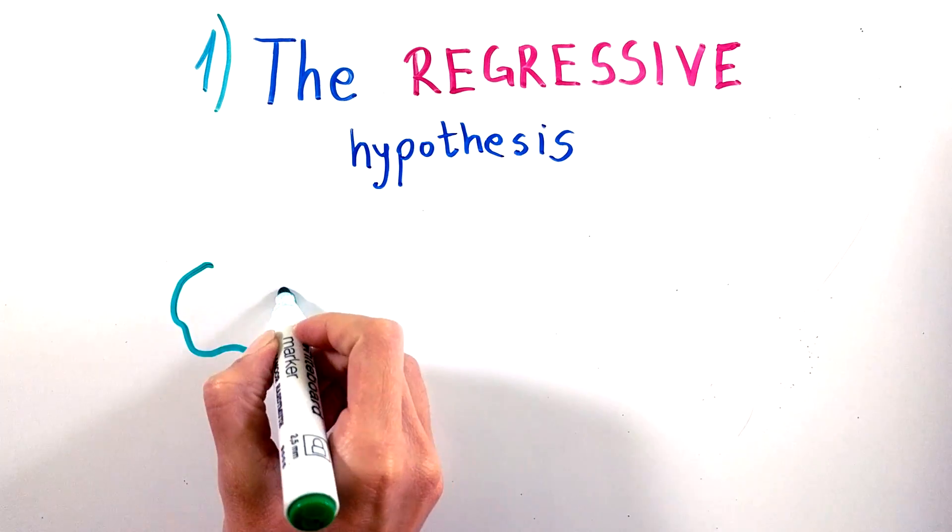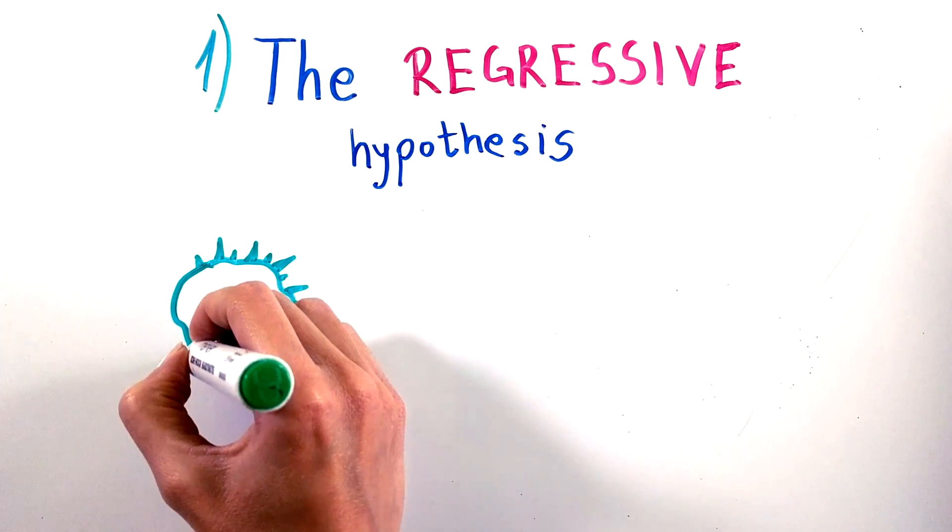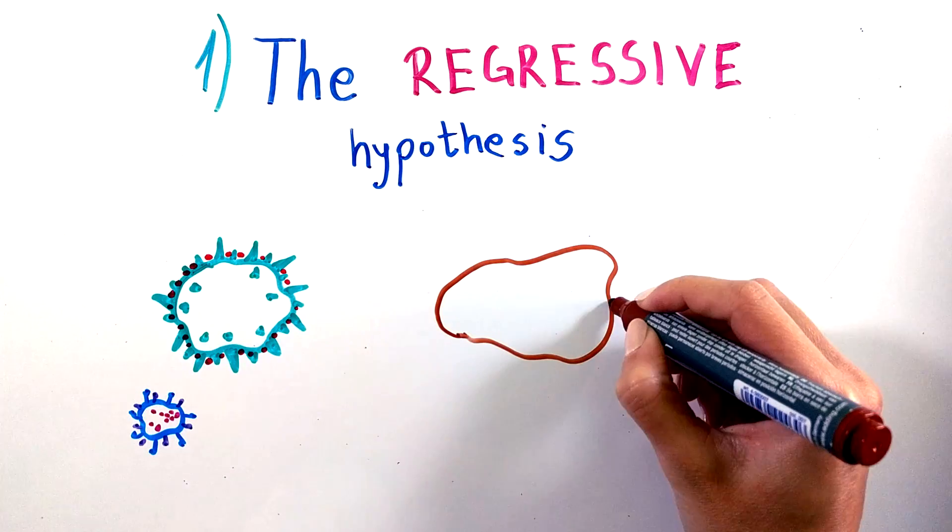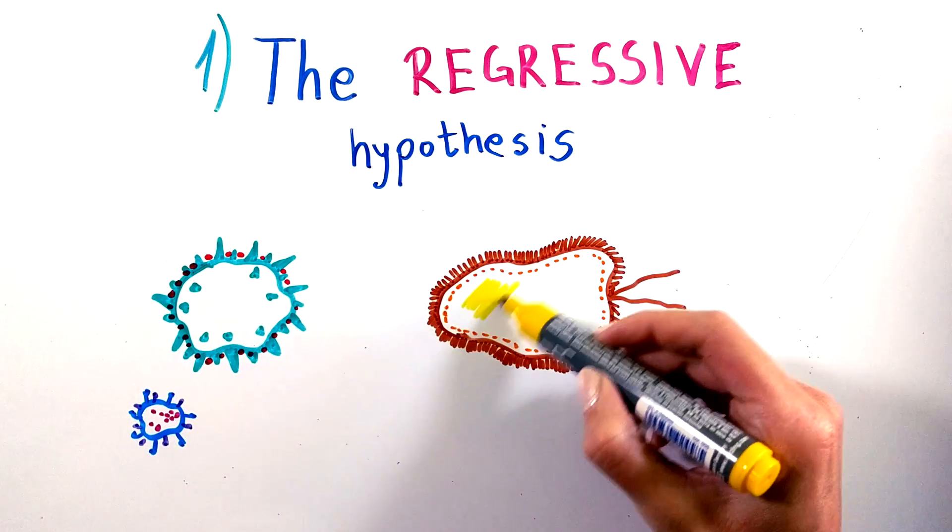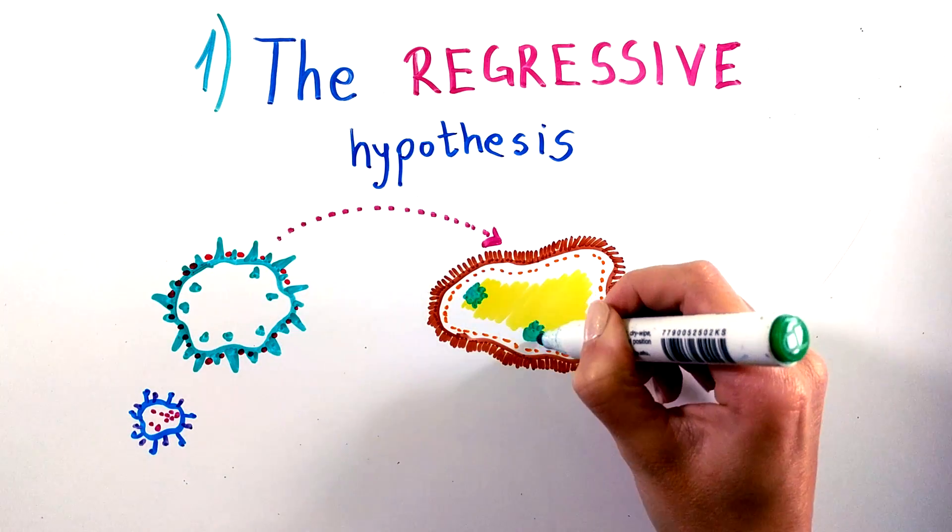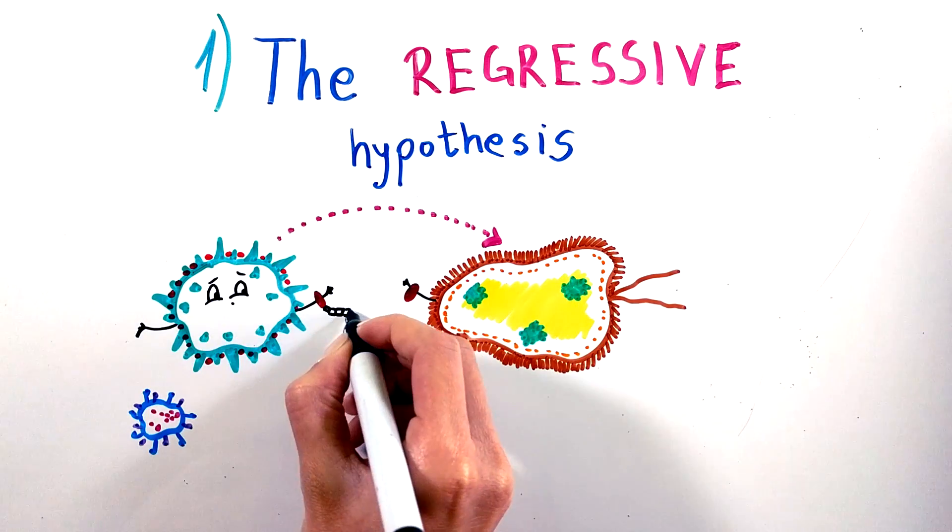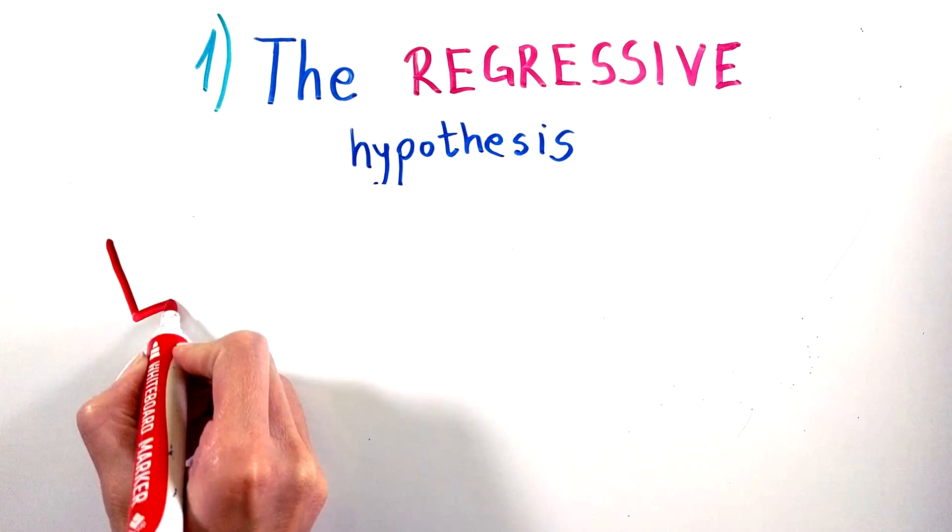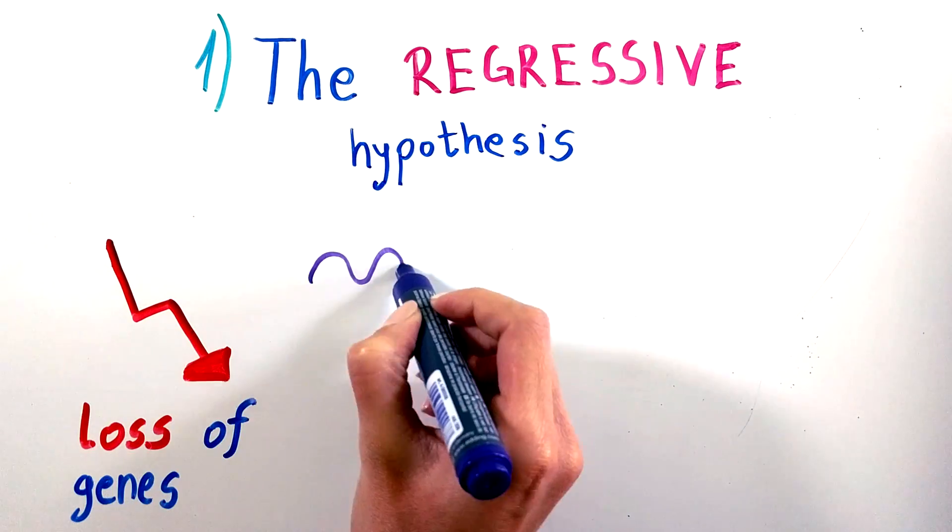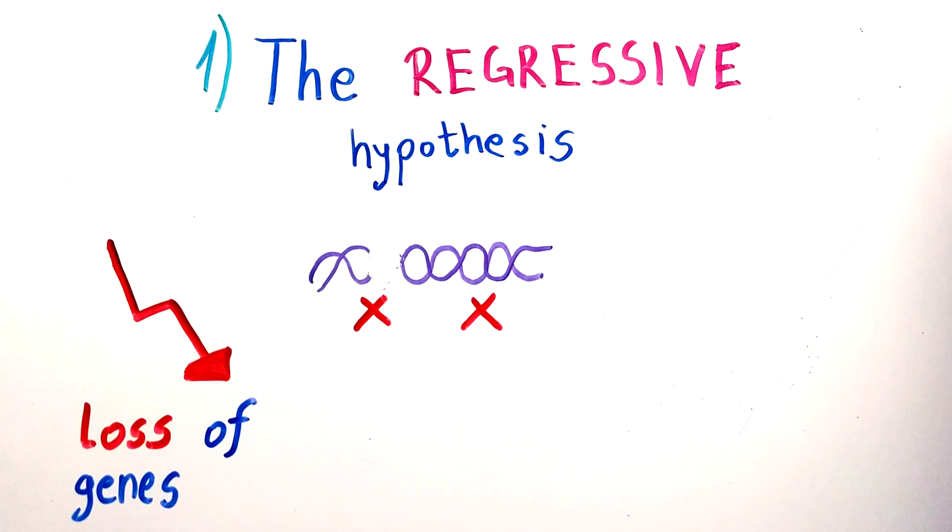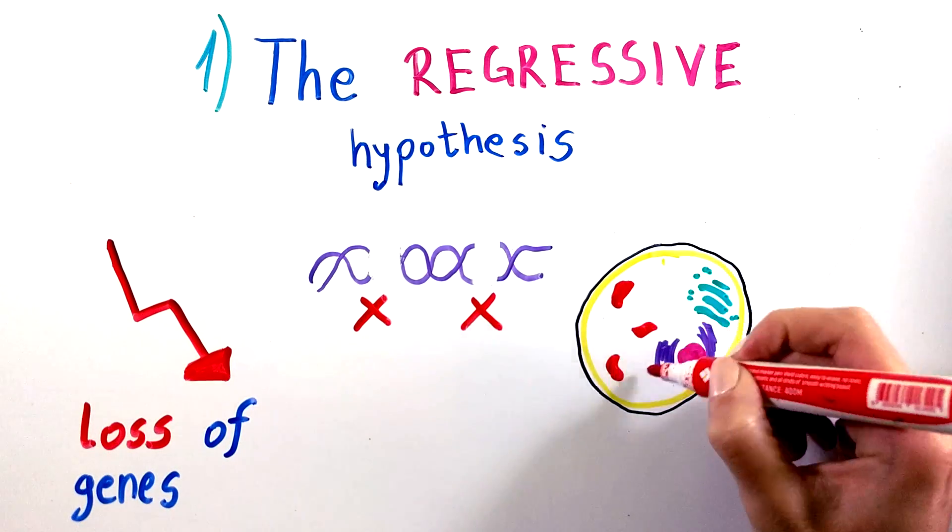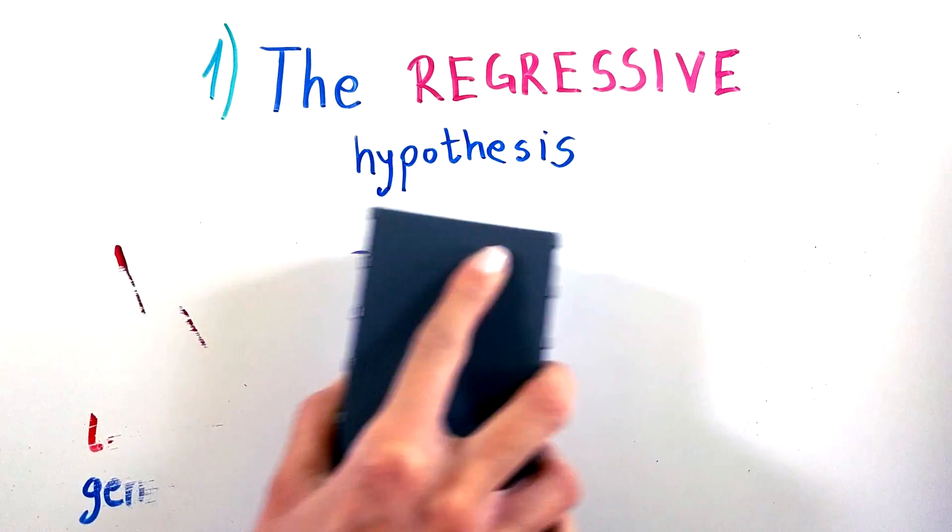The next is the regressive or reduction hypothesis, which suggests that viruses are remnants of free-living cellular organisms that became parasites over time. These viruses parasitized larger cells such as bacteria, and as they became more dependent on the host cell, they lost genes that were essential for survival outside of a cell as they didn't really need them. Consequently, they became unable to replicate independently, which made them completely reliant on other cells.